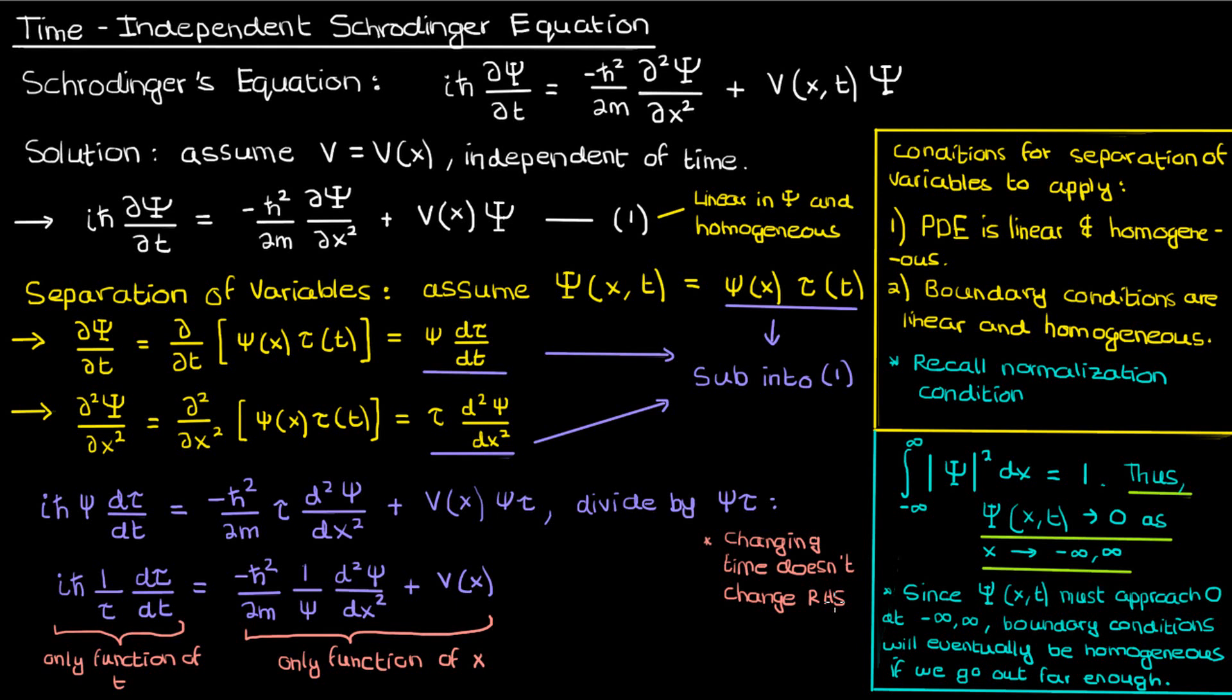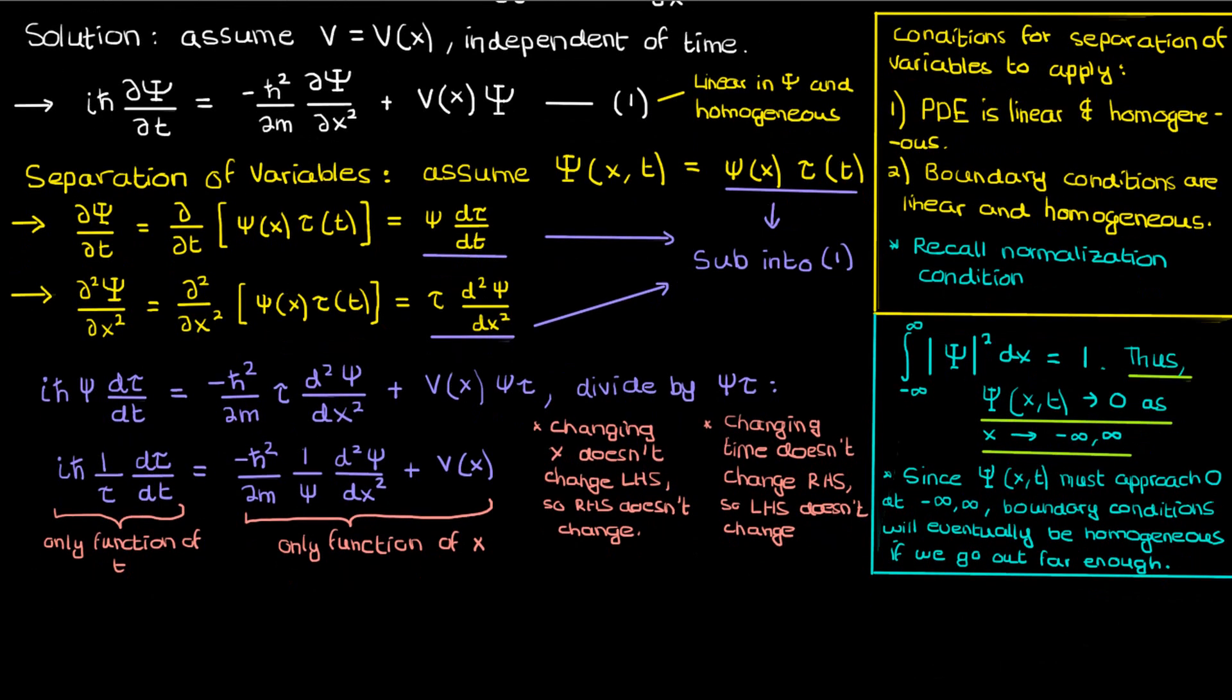So even though the individual terms on the left might change their combination doesn't change because the combination has to equal the right hand side which is constant with time. Similarly if I change the position x then the left hand side of the equation stays constant which means that the right hand side must also remain constant. So changing either x or t doesn't affect either half of the equation so we say that both halves are constant.